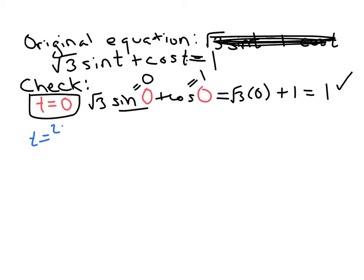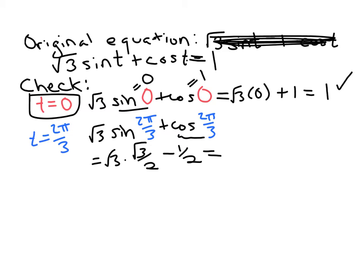Now let's check 2π/3. So plug it into the original equation. √3 sin(2π/3) + cos(2π/3). So that's equal to √3. Sine of 2π/3 is positive √3/2. Cosine, remember this is in quadrant 2. Cosine of 2π/3 is equal to -1/2.